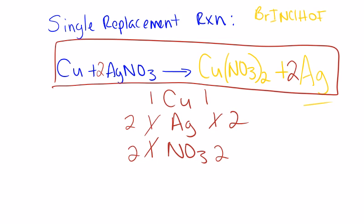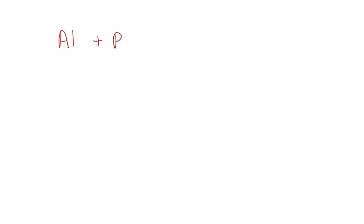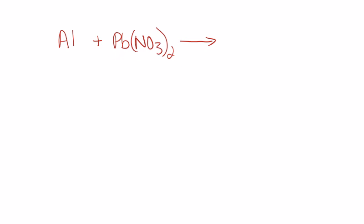We are going to be doing the practices on page 8. So on page 8, we start with example Roman numeral one: Al plus Pb(NO3)2. We need to recognize this as a single replacement reaction because there is a free element and a compound — that's how we recognize these every time. They are going to be switching places, swapping partners.